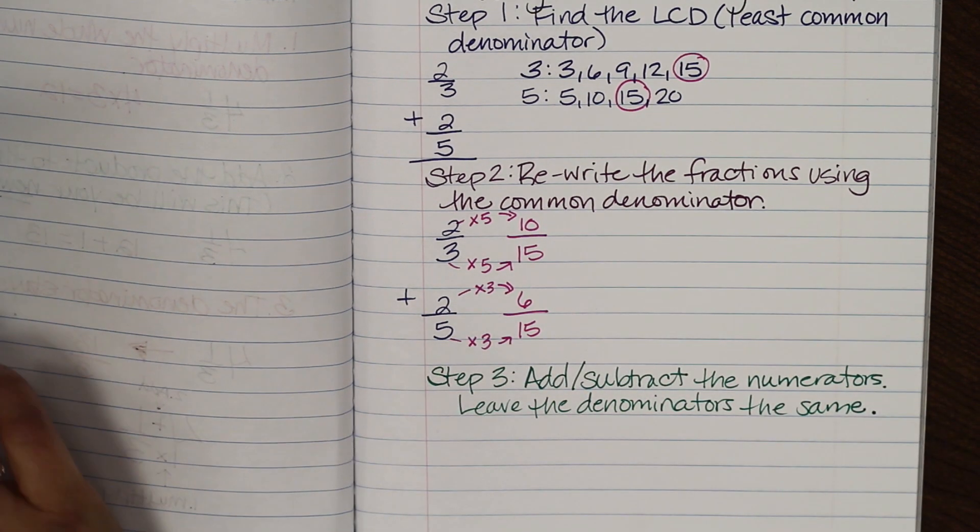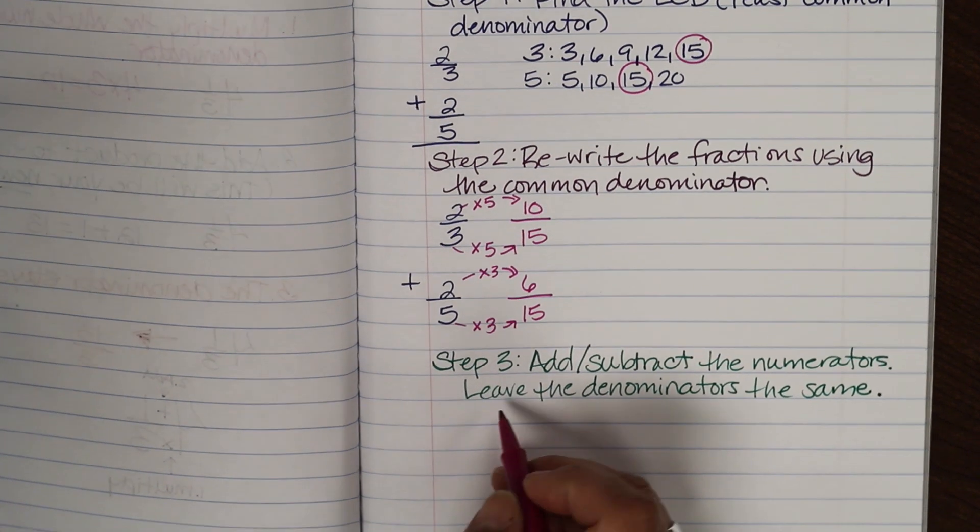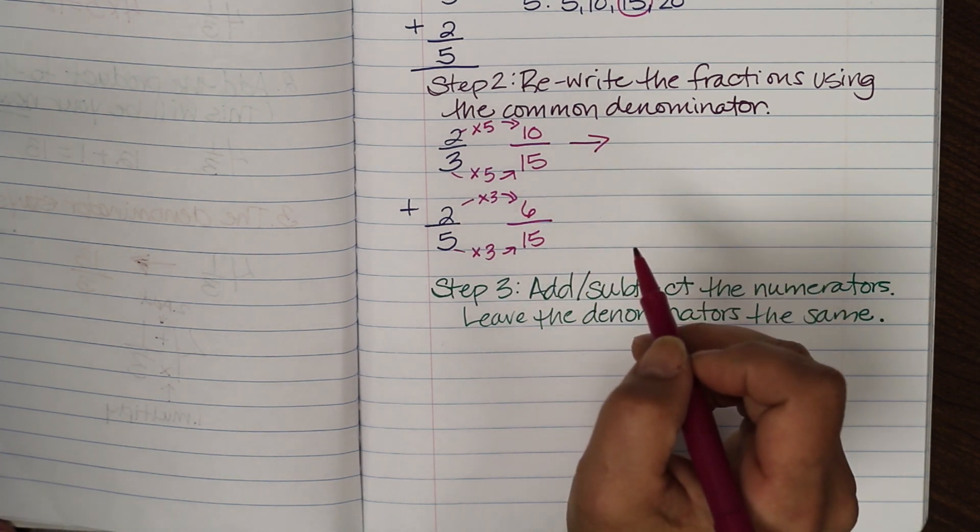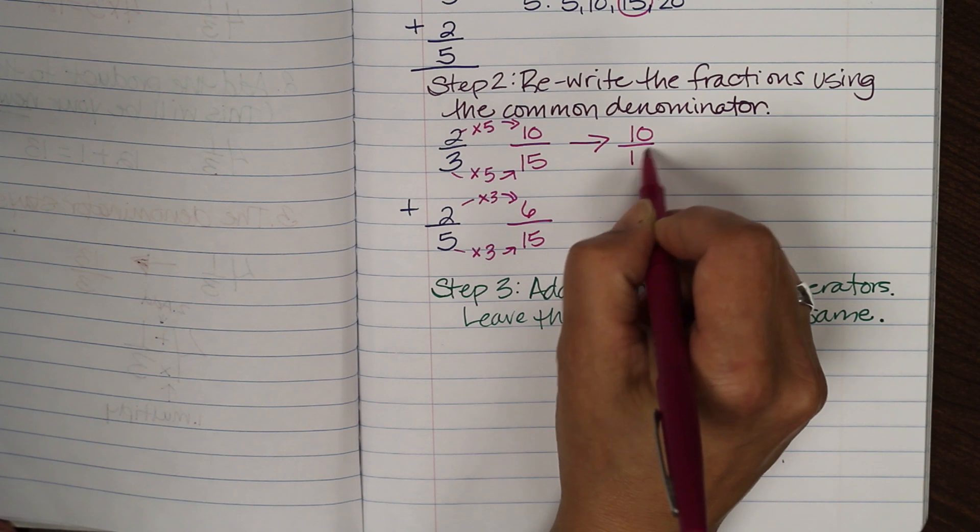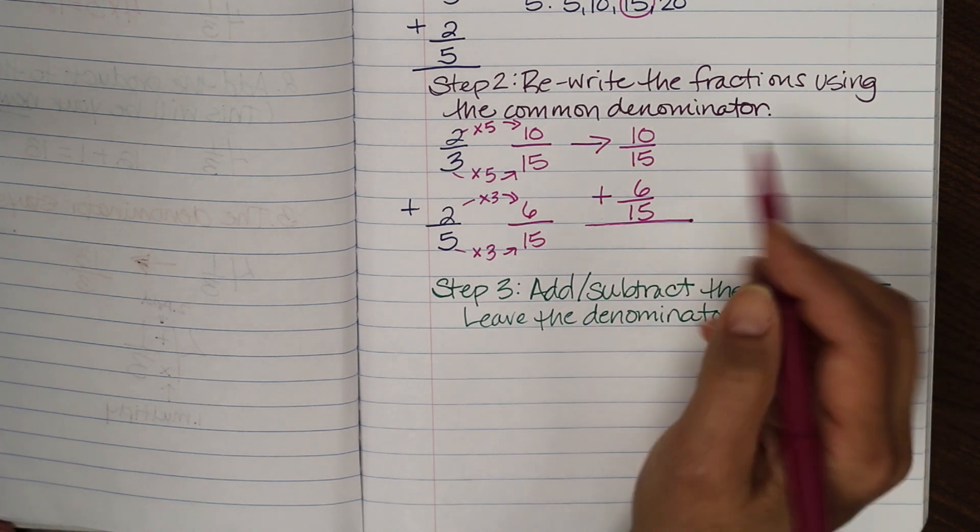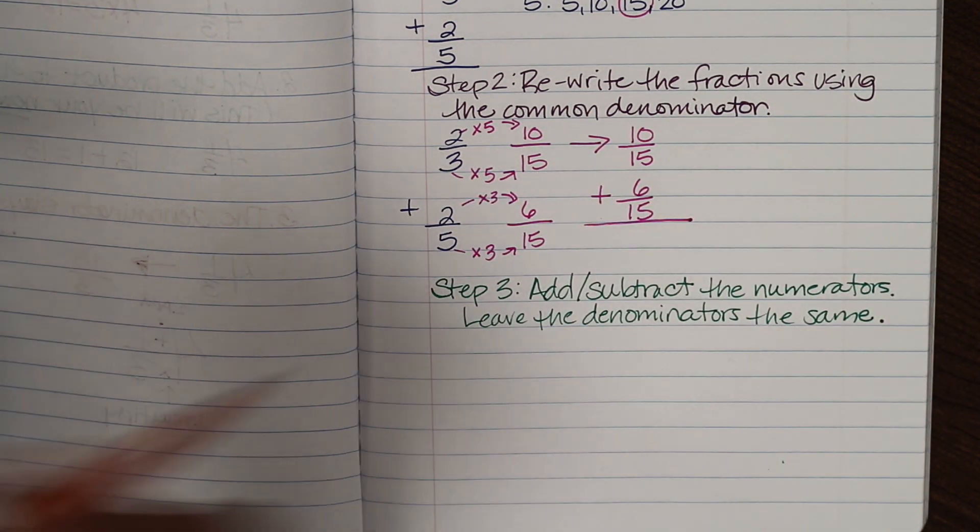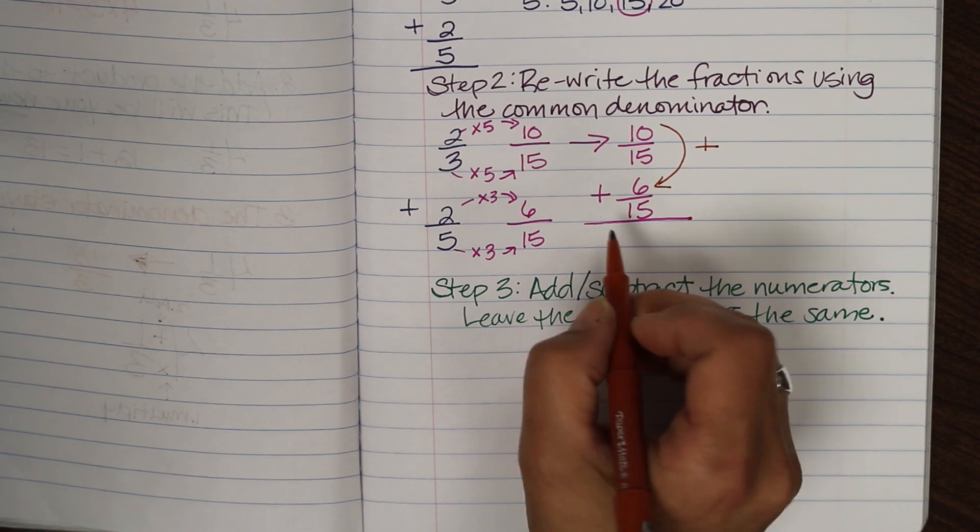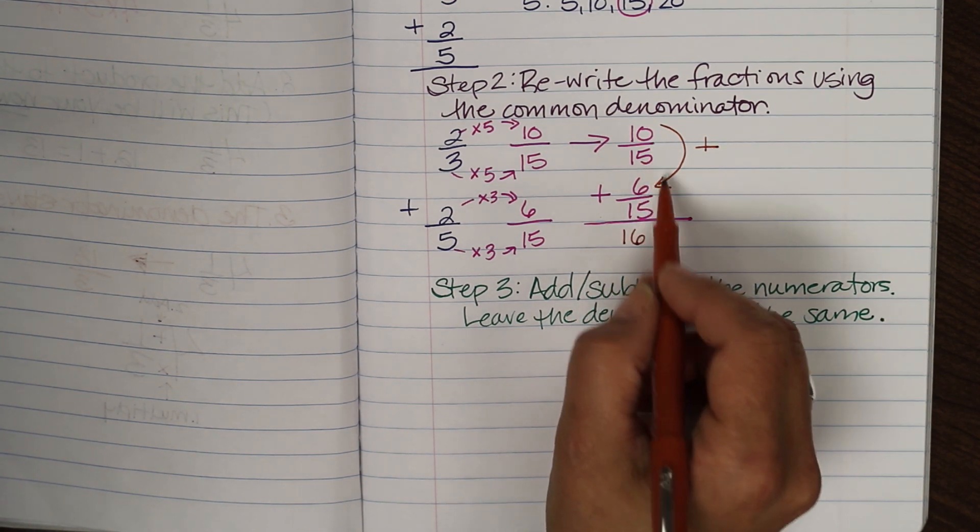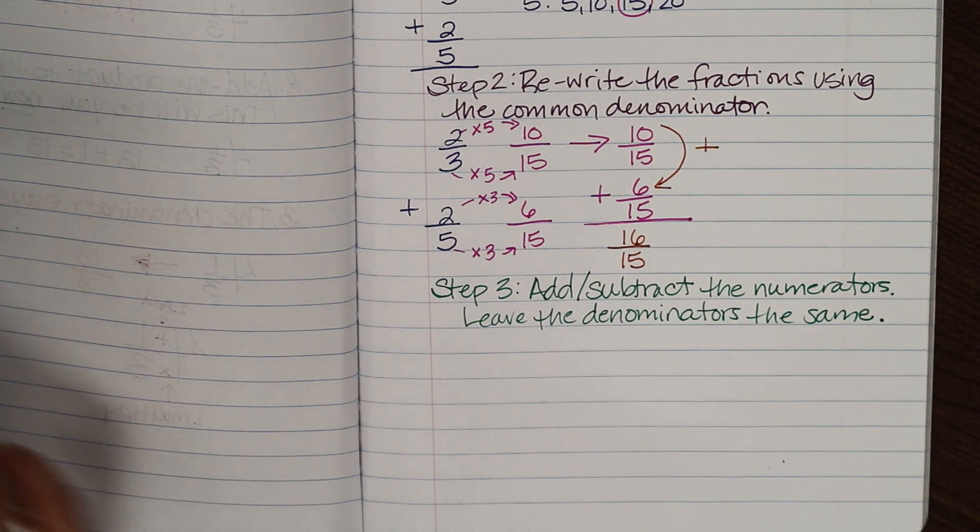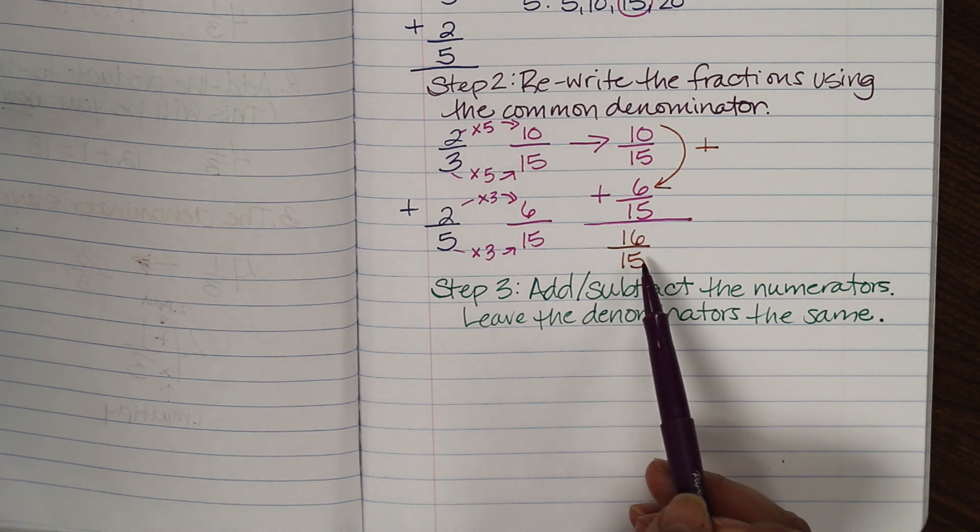So I'm going to show you an example of this. So our new equation was ten fifteenths plus six fifteenths. I simply just add the numerators. I'm only going to add these two together. So ten plus six is sixteen and then our denominators stay the same.